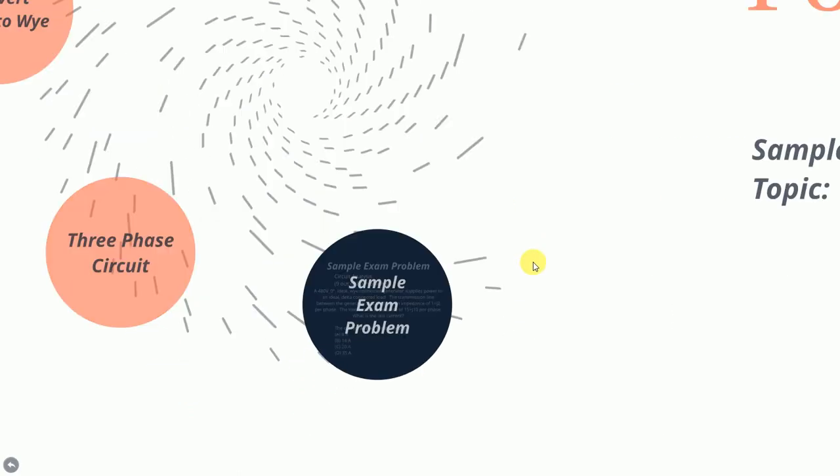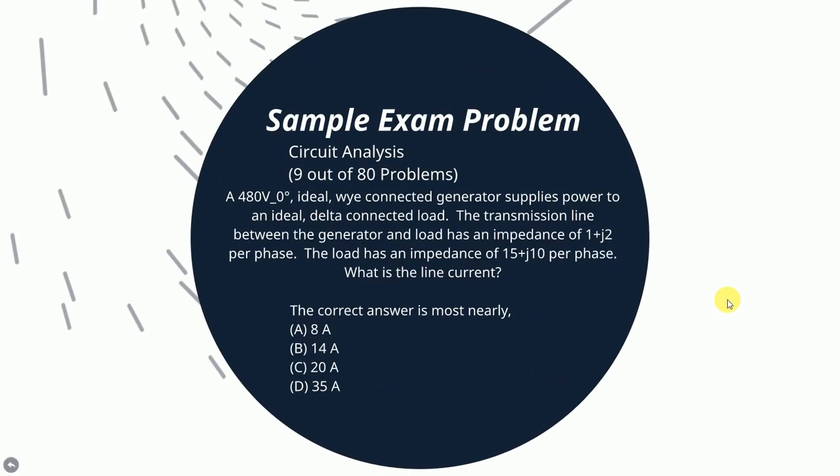The question reads: A 480 volt angle 0 degrees ideal Y connected generator supplies power to an ideal delta connected load. The transmission line between the generator and load has an impedance of 1 plus J2 per phase, and the load has an impedance of 15 plus J10 per phase. What is the line current? The possible solutions are shown below.